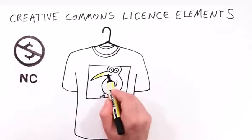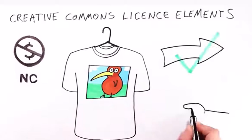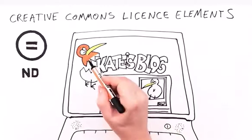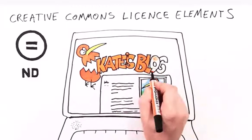Tim wants to print the photo onto t-shirts and distribute them to friends. He can do this, but he must not sell them. This is No Derivatives, and it means that Kiri hasn't given permission to change her photo. Kate can use CC Kiwi on her design blog but will need to ask Kiri before retouching or mixing up the image.